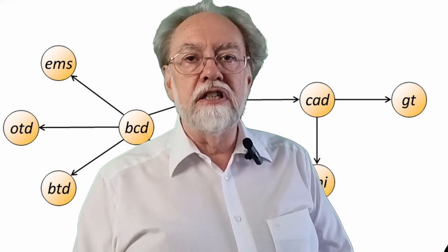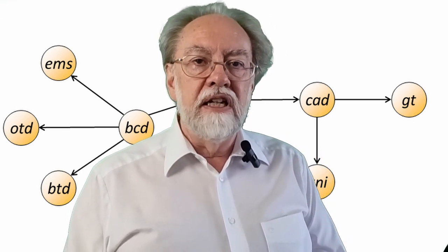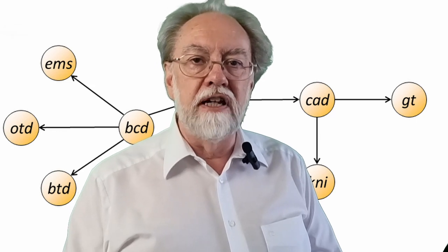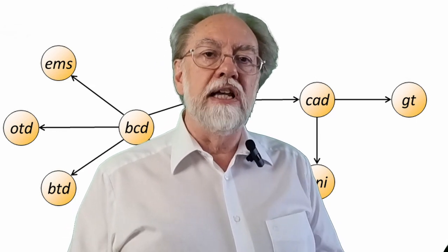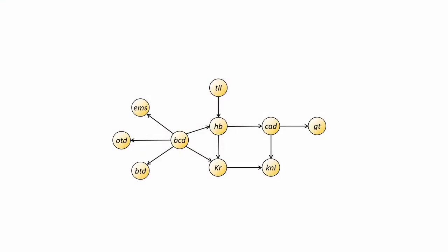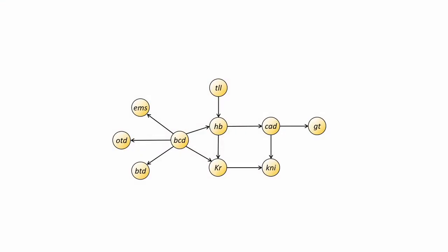An example of such a transcription regulatory gene network is the one of the so-called GAP genes in Drosophila, which control the first steps of the morphogenesis of this fly. These are the positive activating effects only. If we add the negative ones, these are the negative ones. Here as red arrows, the picture becomes way more complex. What is important to note, this is only kind of inner transcriptional network. It depicts only the regulations transcription factor genes exert amongst themselves.